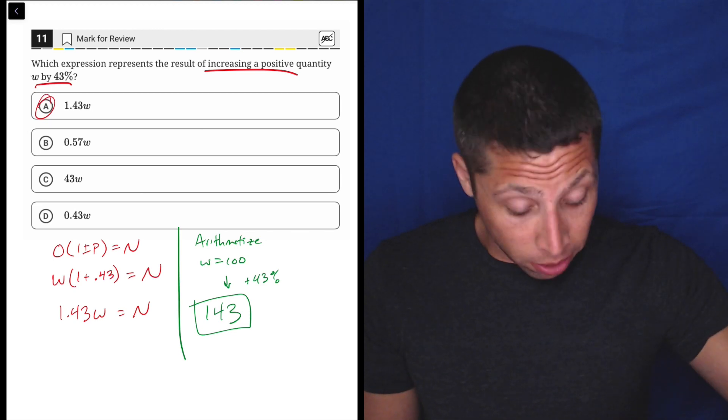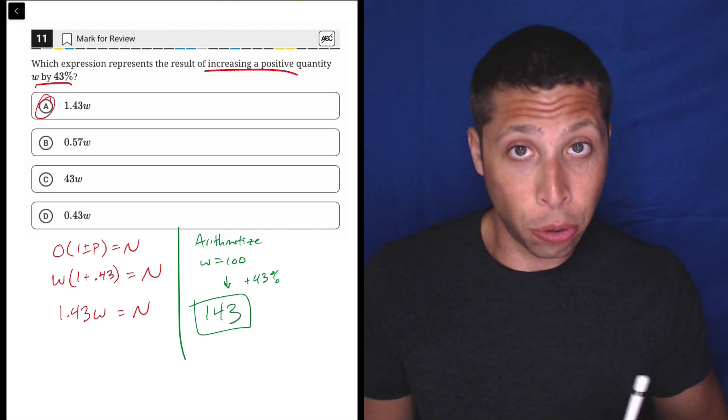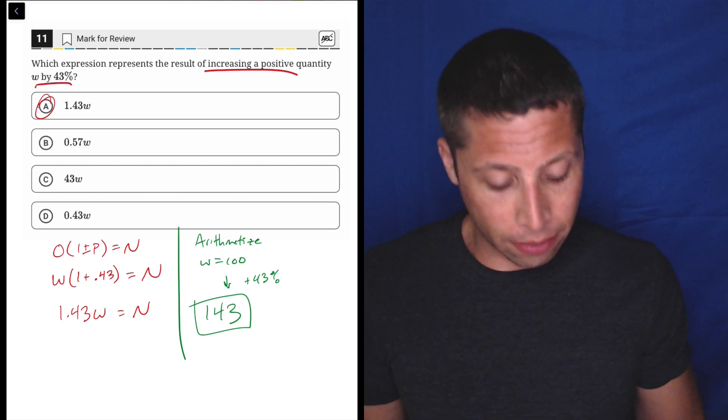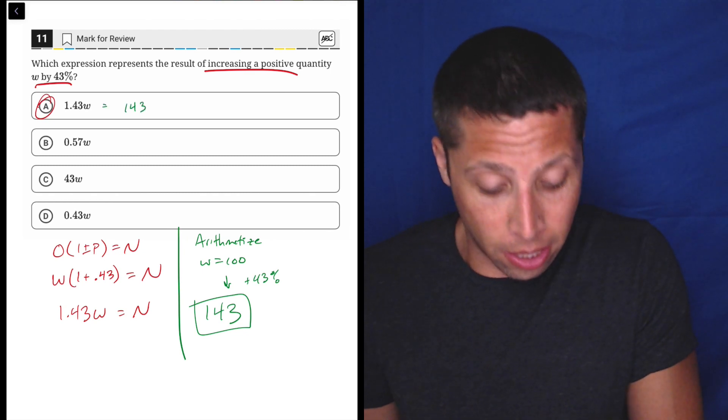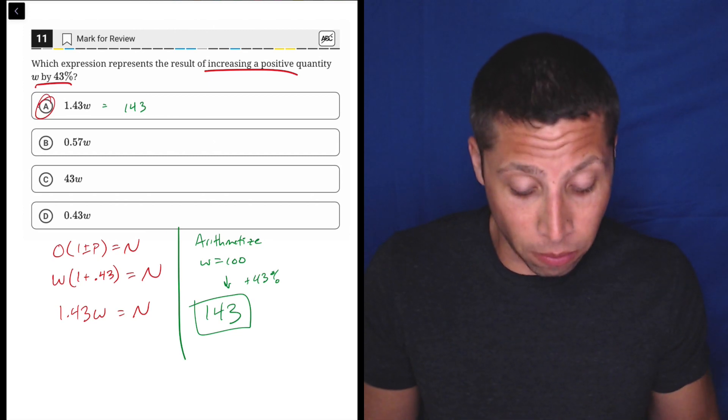Now we just take our W and we put it into the answer choices as well, and only one of them is going to give us 143. So 100 times 1.43 is 143.